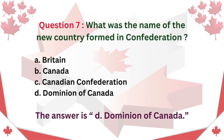Question 7: What was the name of the new country formed in Confederation? A. Britain. B. Canada. C. Canadian Confederation. D. Dominion of Canada. The answer is D: Dominion of Canada.